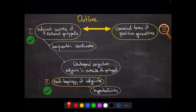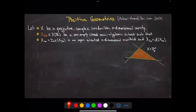Now let me spend a few minutes on the positive geometry connection. To fix notation I'll repeat the definition. Our setting: we have a nice ambient variety X — projective, complex, irreducible, of dimension n — and a semi-algebraic subset of the real part that is closed, non-empty, and whose interior is an open oriented manifold of dimension n, with the closure of the interior recovering the set.